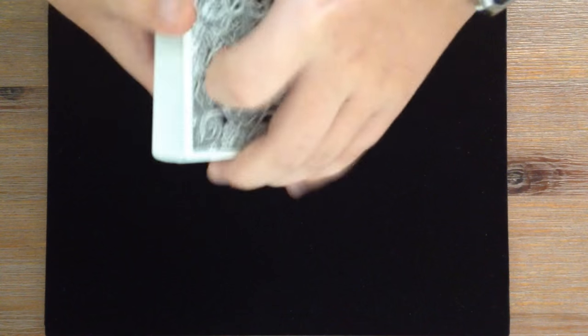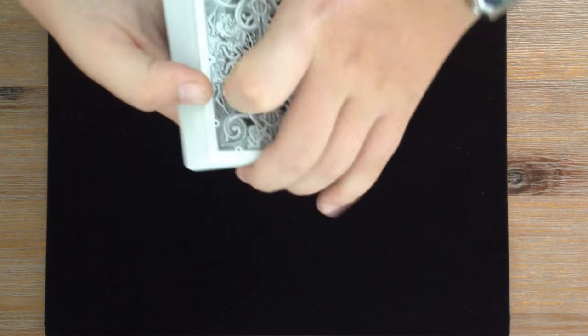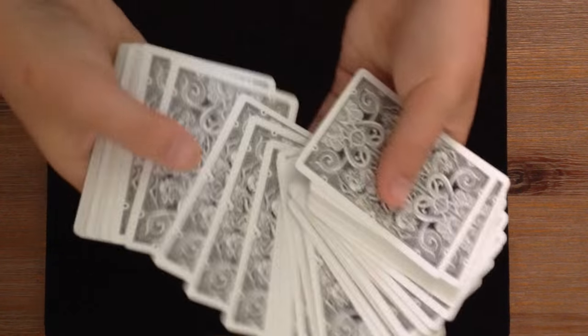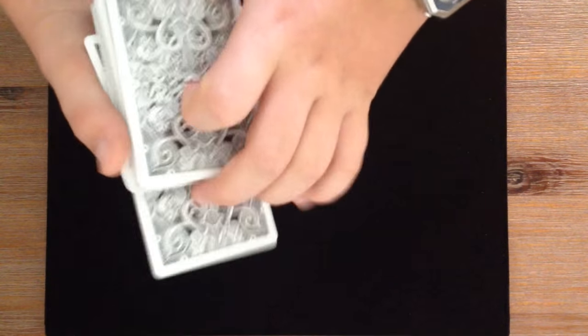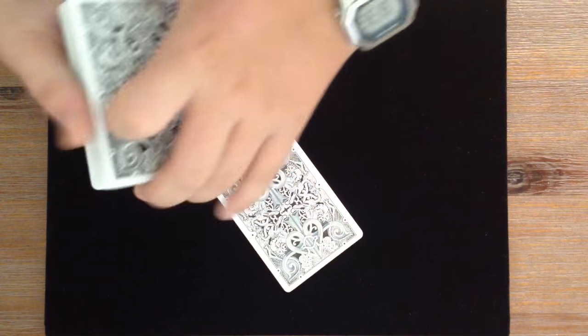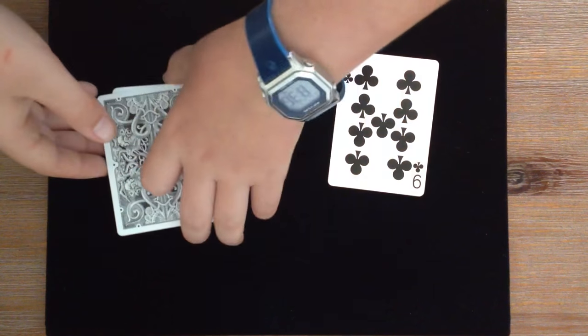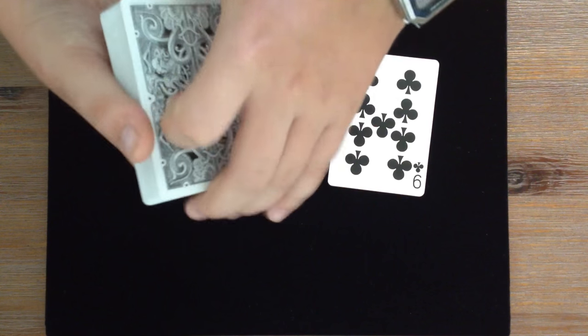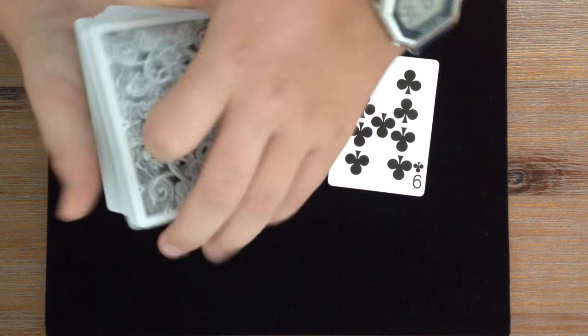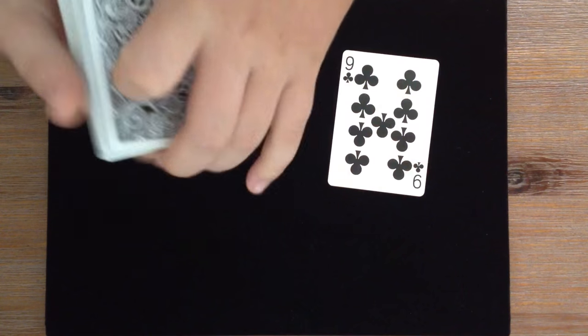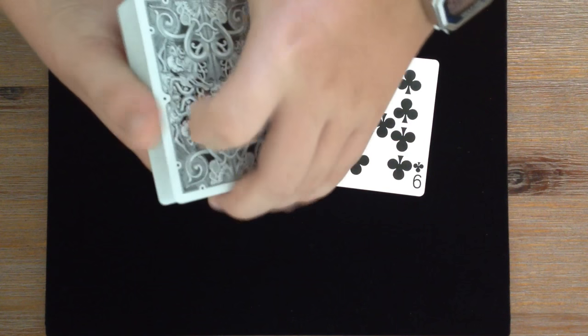After you've shuffled up the pack, you can get the spectator to freely select any card. It is truly a free choice. Let's just say they select this card. So let's take a look at this card. What we have is the nine of clubs. That's a very nice card. Now what you want to do is just say, make sure you remember that card, and you can keep shuffling the pack if you want it.